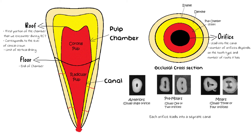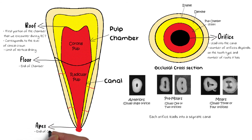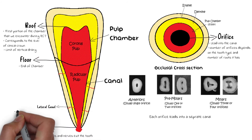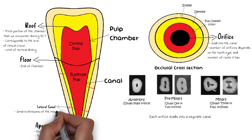The opening of the canal present on the floor of the chamber is known as the orifice. This orifice leads to a canal, and the terminating point of the canal where the canal ends is known as the apex. It is here where the pulp vessels and nerve exit the tooth. Along the length of the canal, there may sometimes be small extensions of the canal which directly lead into the outside periodontium. These are known as lateral canals or accessory canals, and contain small vessels along their path.